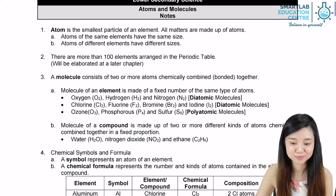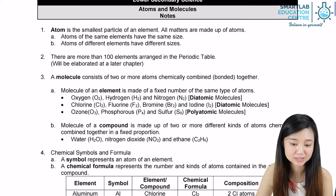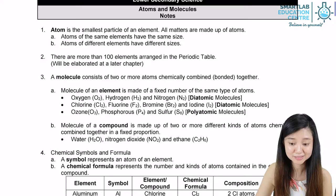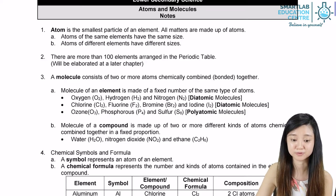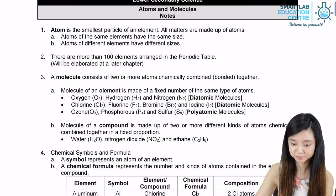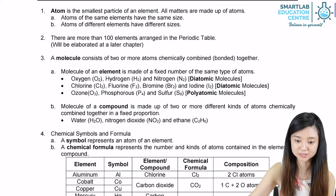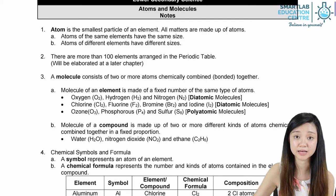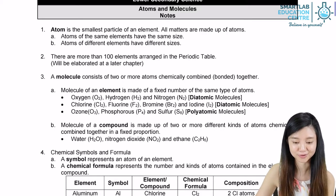As we noticed earlier, there are about 100 elements arranged in the periodic table, and there are going to be many, many elements on the periodic table.